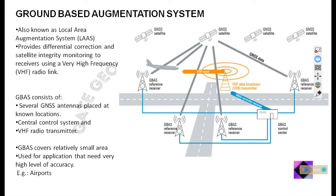For aircraft landing and navigation where precise positioning is needed, the G-BAS system can be implemented at a local airport. It consists of several GNSS antennas placed at known locations, a central control system, and a very high frequency radio transmitter. This VHF radio transmitter is what differentiates G-BAS from S-BAS: in S-BAS the geostationary satellite is used, whereas in G-BAS the VHF radio transmitting tower is used. This is all about the GNSS augmentation system.